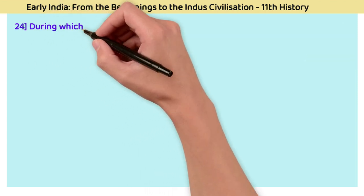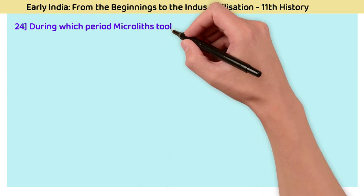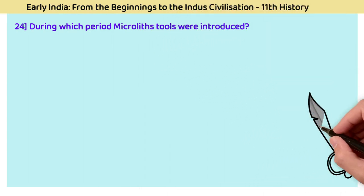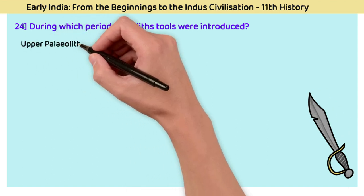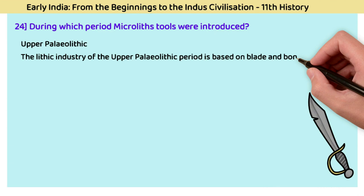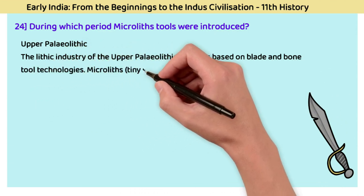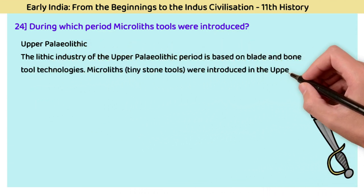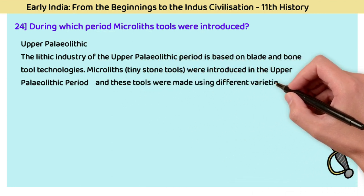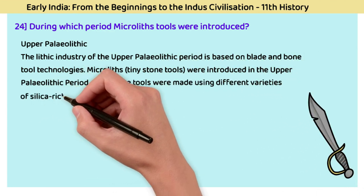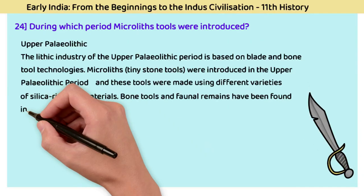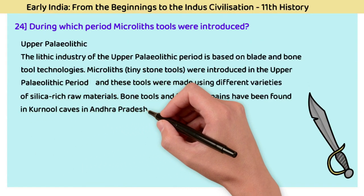Question 24: During which period were microlith tools introduced? The answer is the Upper Paleolithic. The lithic industry of the Upper Paleolithic period is based on blade and bone tool technologies. Microliths — tiny stone tools — were introduced in the Upper Paleolithic period and made using different varieties of silica-rich raw materials. Bone tools and faunal remains have been found in Kurnool Caves in Andhra Pradesh.